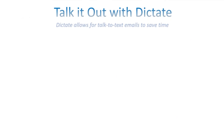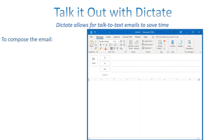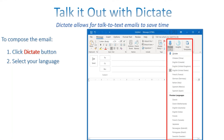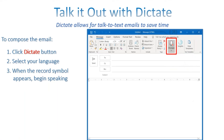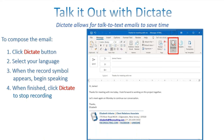You can also 'talk it out' with Dictate, which allows talk-to-text emails to save time. To compose a dictated email on desktop, click the Dictate button at the top, select your language from the list of available languages, and then you'll see the record symbol appear. Begin speaking to compose your email. Make sure you're speaking slowly and clearly with minimal background noise so it picks everything up correctly.